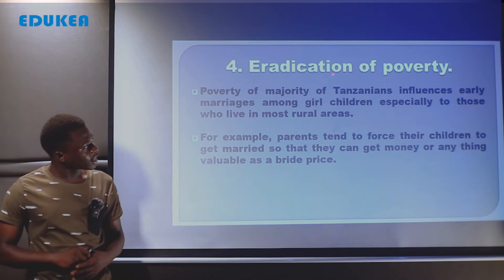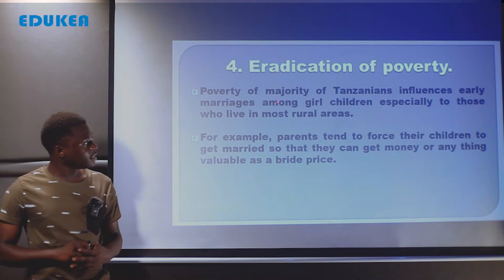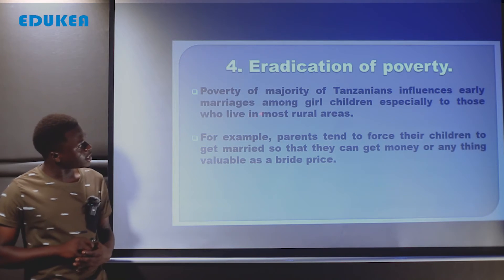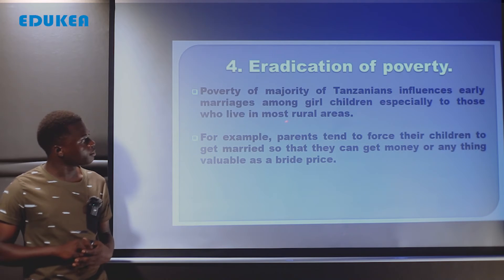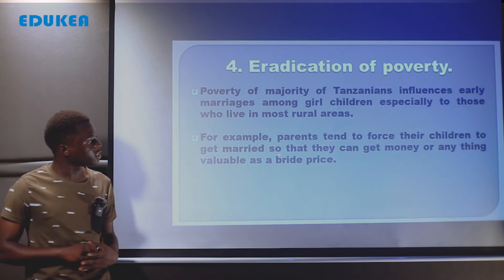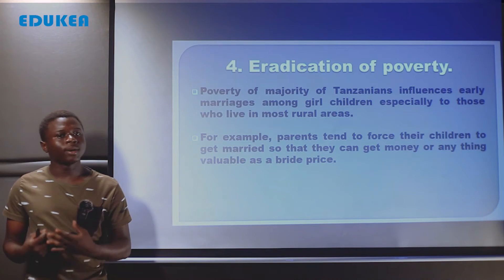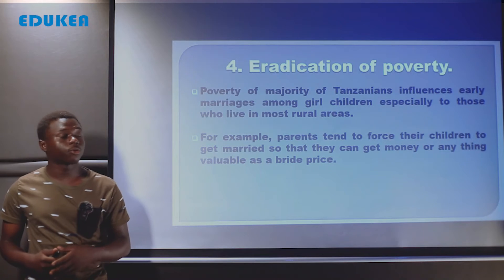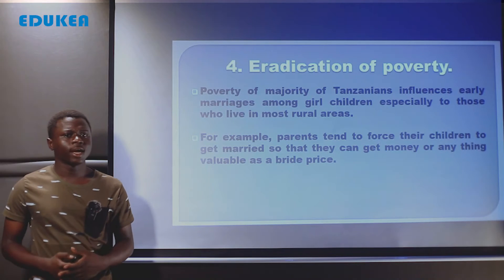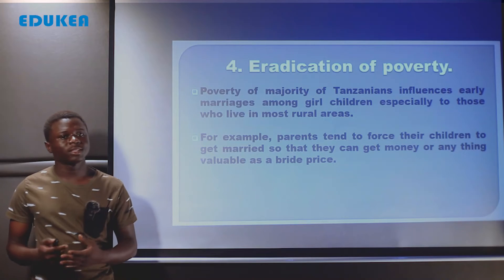Another point is eradication of poverty. Tuondoe umasikini katika jamii. Poverty is a major factor influencing early marriages among girl children, especially those who live in rural areas. For example, parents tend to force their children to get married so that they can get money or anything valuable as bride price. Unakuta umasikini ni sababu moja inayosababisha kuwepo kwa ndoa za mapema among girl children.